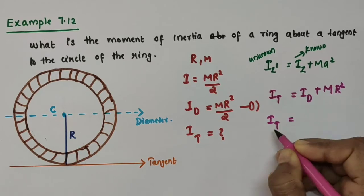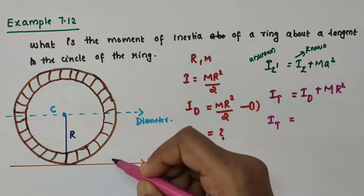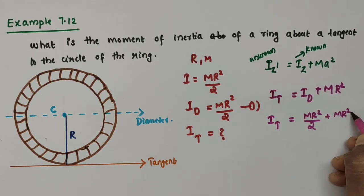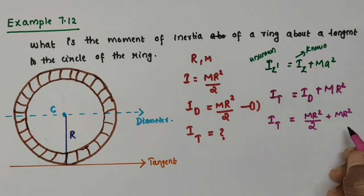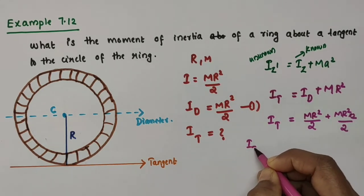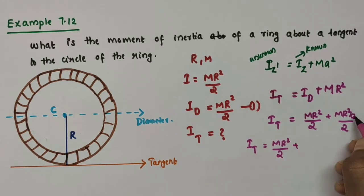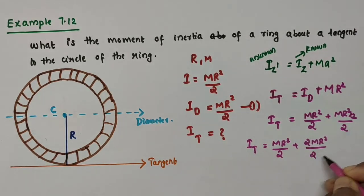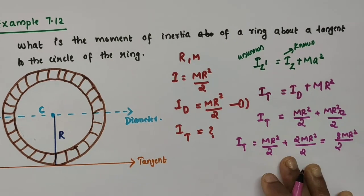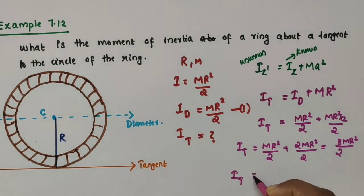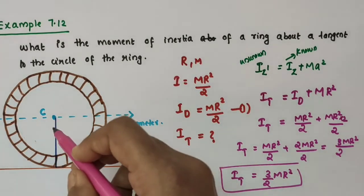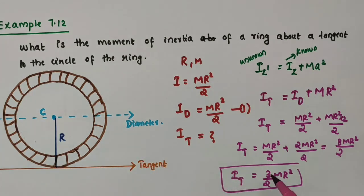So I_T, the moment of inertia of this ring about the tangent, equals I_D + MR², which is MR²/2 + MR². Making the denominator the same: MR²/2 + 2MR²/2 = 3MR²/2. Therefore, I_T = (3/2)MR². That is the moment of inertia of a ring of radius R about a tangent to the circle of the ring.